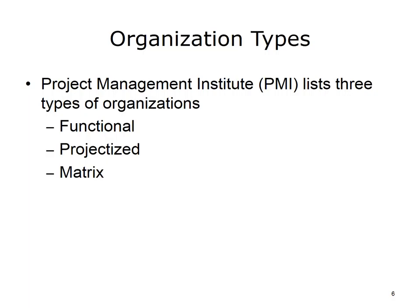The Project Management Institute, or PMI, is an organization that sets standards for managing projects. PMI defines three types of structures for organization: Functional, Projectized, and Matrixed. And all of these types of organizations would be considered in a hybrid state when they are in the midst of new projects. Let's explore these types of organizations.